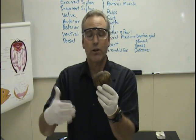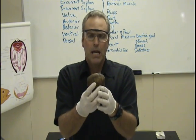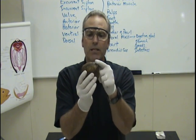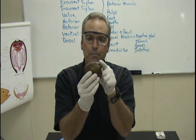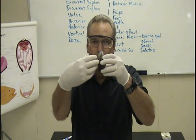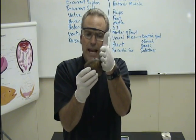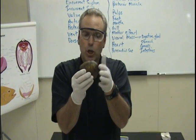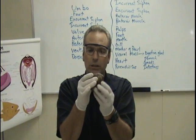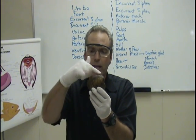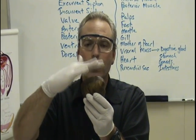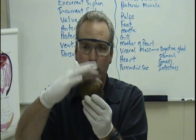Let's go over the anterior, posterior, dorsal, and ventral. The anterior side is where the umbo is — these little bumps right here are the umbo. Where they come together it's called a hinge; if we were to open this up it would hinge open. So here's the anterior end, closest to the umbo. The posterior end is the opposite side. The dorsal side is where the hinge is — dorsal hinge.